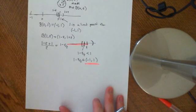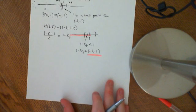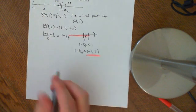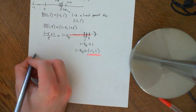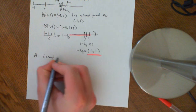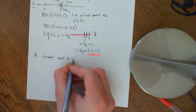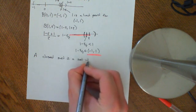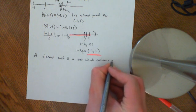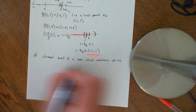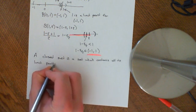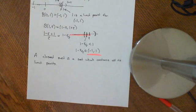So now a theorem we want to prove. There's a very useful theorem about these limit points which concerns closed sets. This is the theorem that a closed set is a set which contains all its limit points. We will prove that theorem in the next video.